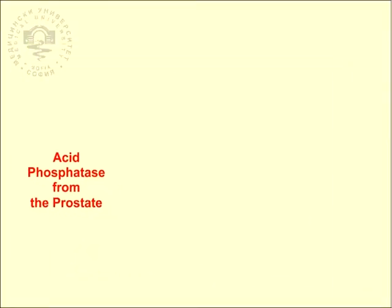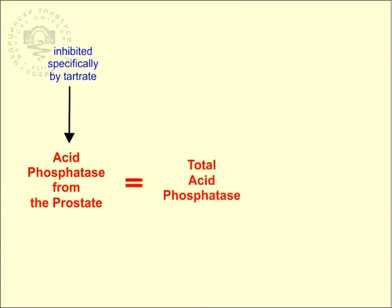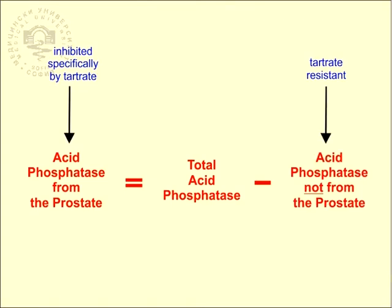The acid phosphatase from the prostate is inhibited specifically by tartrate. The difference between the total acid phosphatase and the tartrate-resistant form — i.e., the one which is not from the prostate — gives the prostatic acid phosphatase. The levels of the prostatic acid phosphatase increase in cases of prostate cancer, especially, but not always, with metastases.